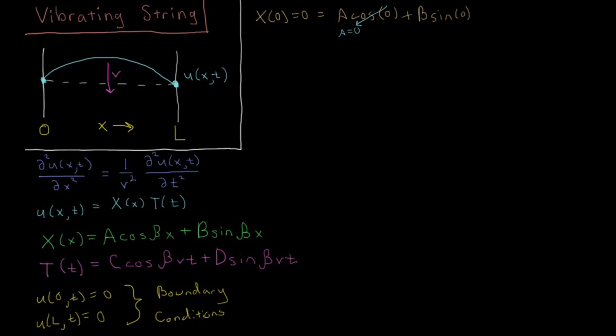Looking at the second part, we have x of L equals zero, so we have B sine of beta L equals zero. Now we could pick B equals zero, but then our displacement is just zero at all space and all time, and the string is completely at rest, not vibrating. That's called the trivial solution and we don't want that. We want the solution for when the string is moving, when it is vibrating, not when it's sitting still. So the only other way is to set the value of sine beta L equal to zero.